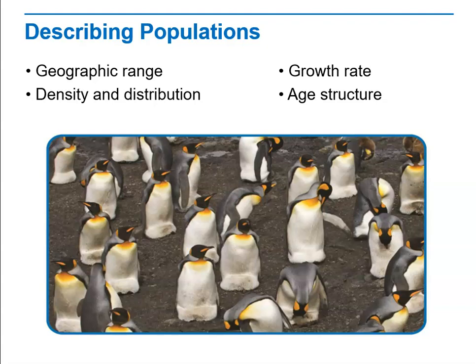Researchers study populations' geographic range, density and distribution, growth rate, and age structure. We're going to look at the first three of these categories. We'll look at age structure more when we talk about human populations.